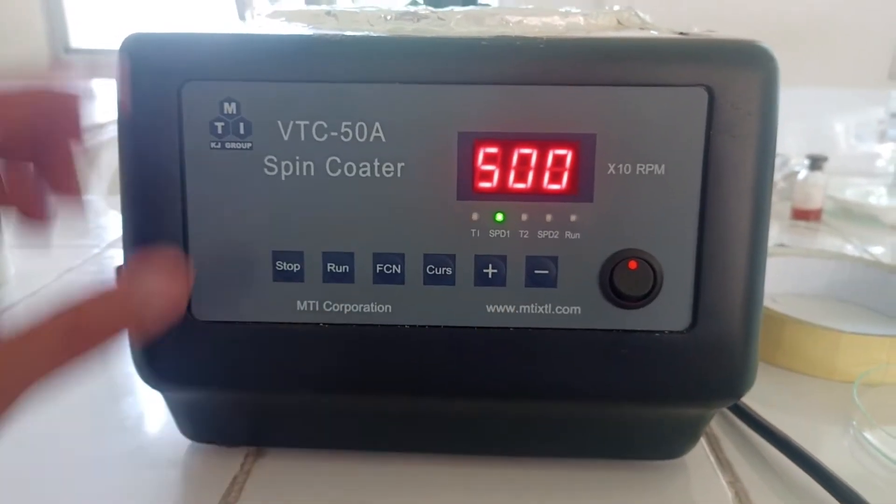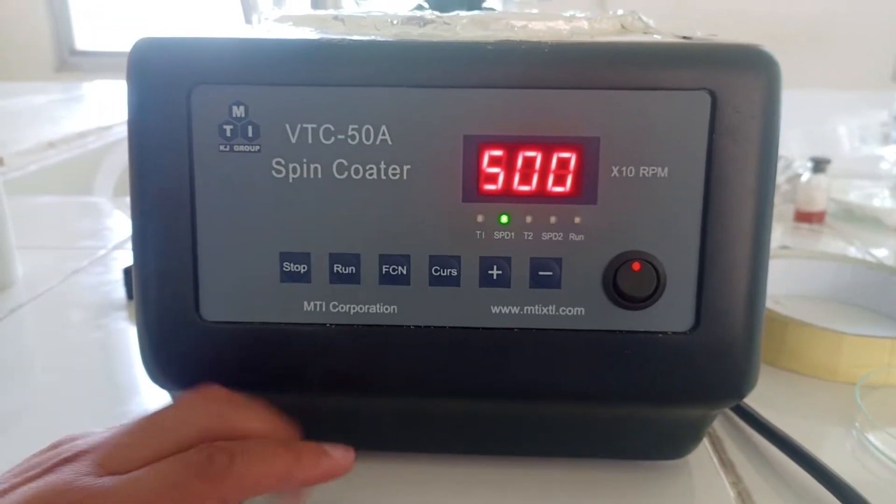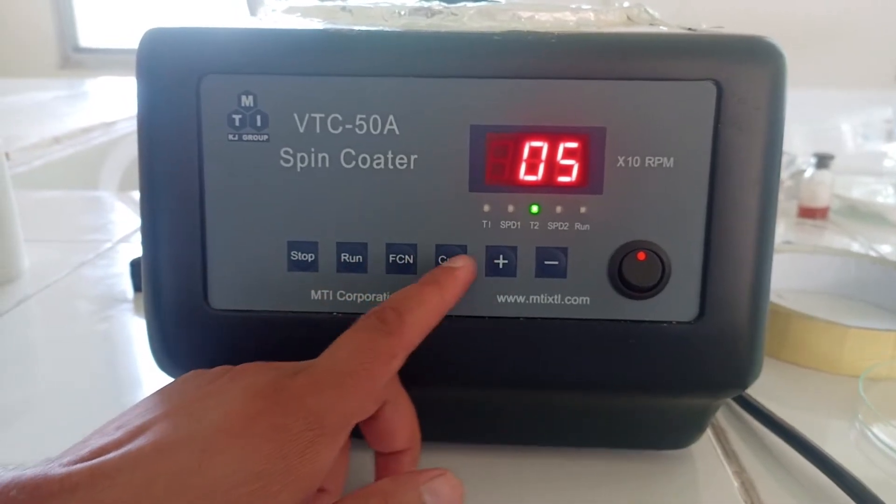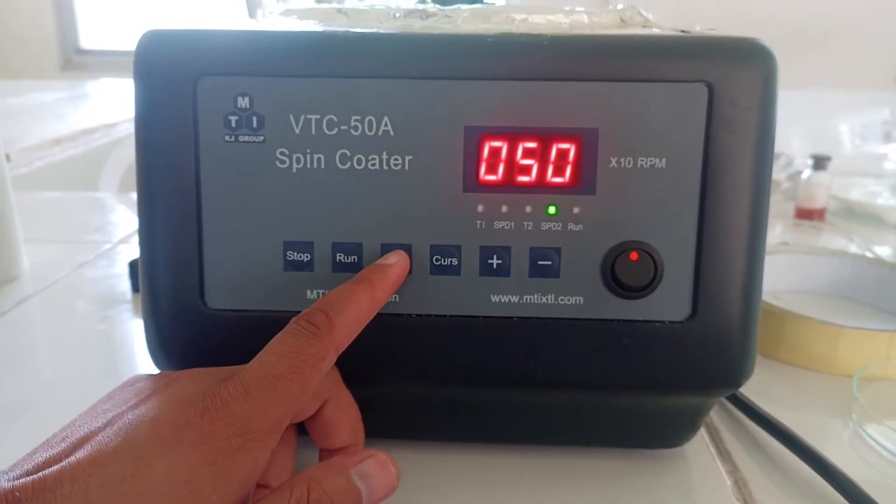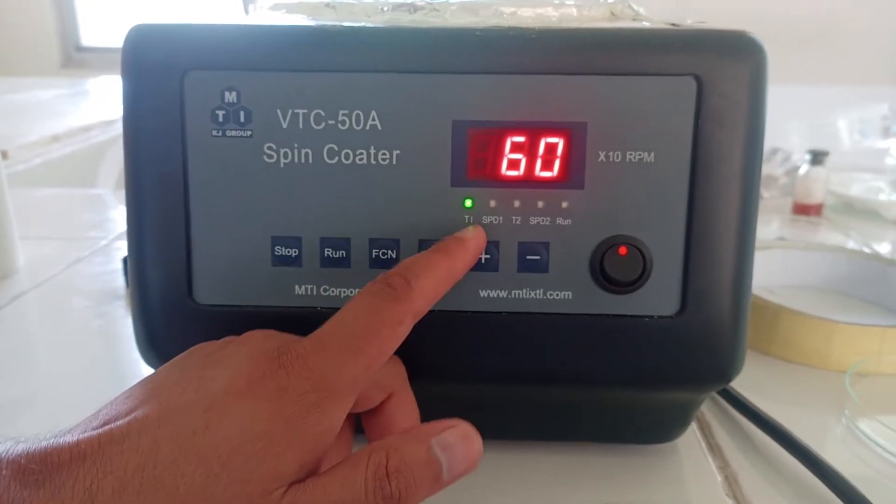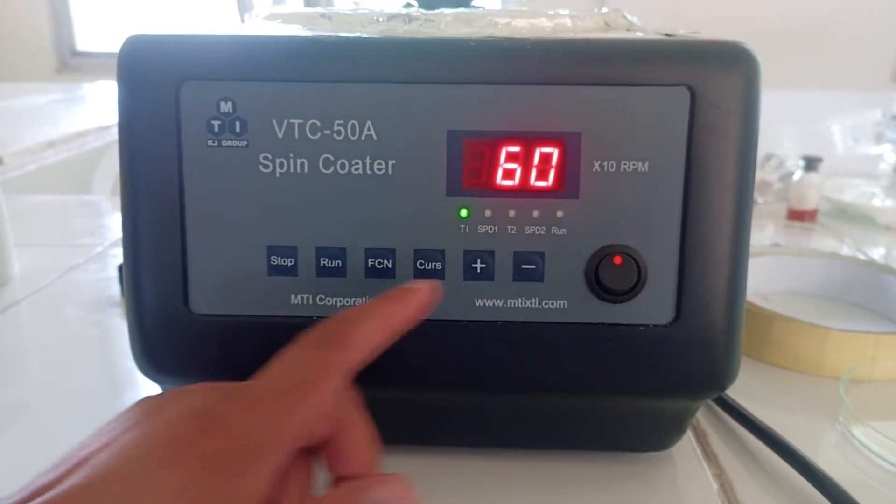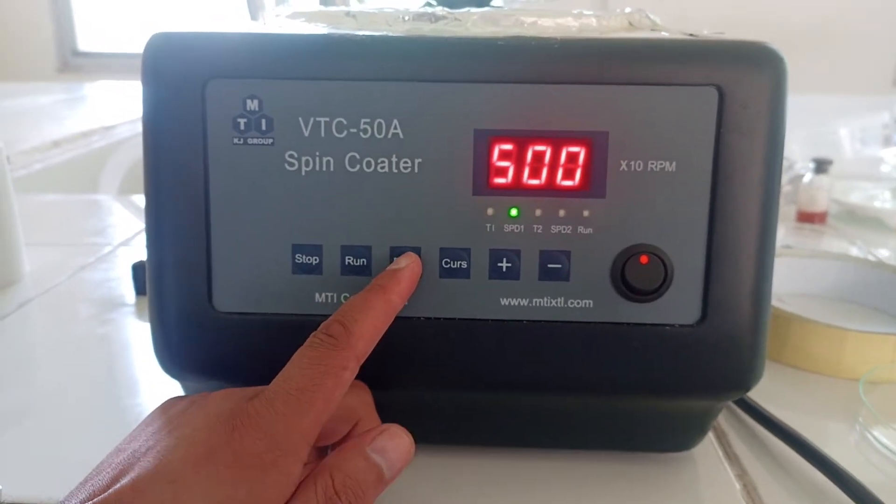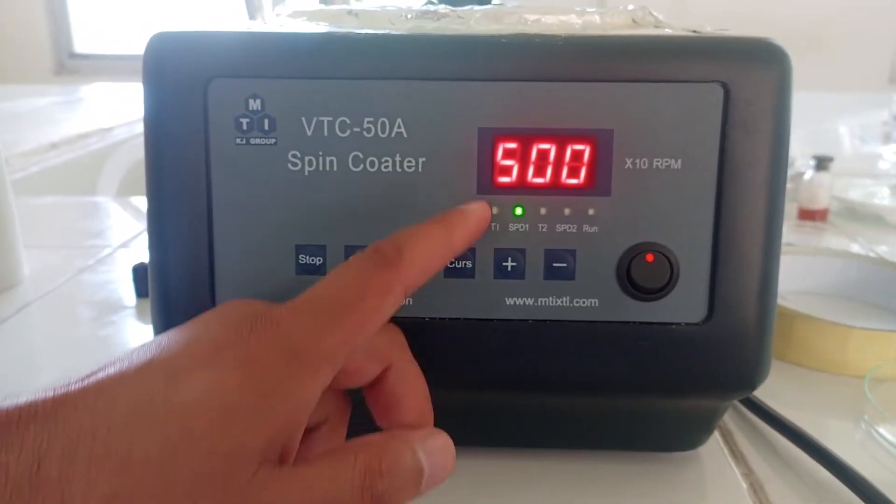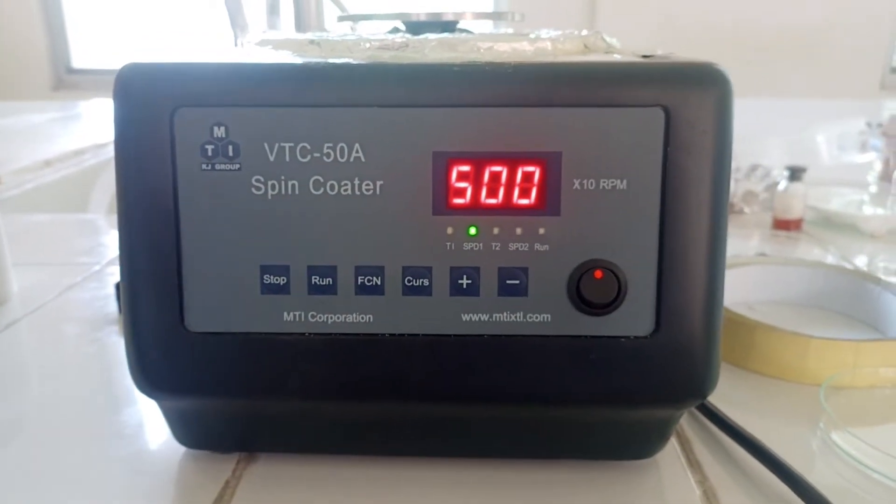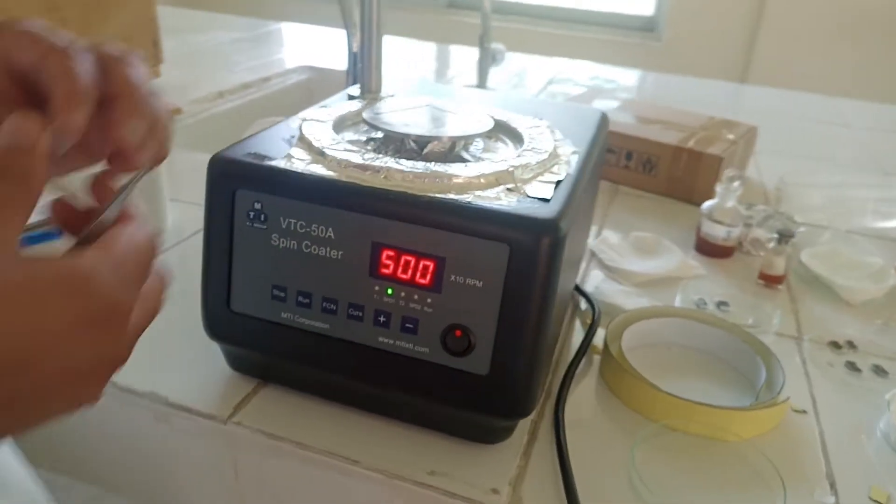We can select time and revolution per minute for this spin coater. Now we have set our program. We have 60 seconds for time one, we can also adjust second cycle and time two. We have 60 seconds time selected, and here we have first RPM that is 500 RPM.